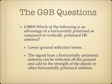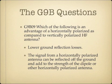Which of the following is an advantage of a horizontally polarized as compared to vertically polarized HF antenna? The answer is lower ground reflection losses. A horizontally polarized antenna and a vertically polarized antenna interact with the Earth differently. The signal from a horizontally polarized antenna — like a dipole hung between two trees parallel to the Earth — can be reflected off the ground and add to the signal strength. A vertically polarized antenna has higher ground reflection loss, so a horizontally polarized antenna has lower ground reflection losses.